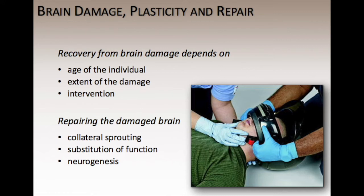Research has been conducted on patients with brain damage to determine how well the brain can repair itself. Recovery from brain damage depends on the age of the individual and the extent of the damage. Much of the brain's ability to repair itself depends on whether the neurons in the damaged area have been completely destroyed or not. If these neurons were not totally destroyed, brain function may be restored over time.